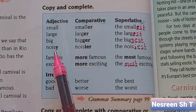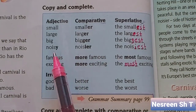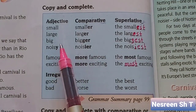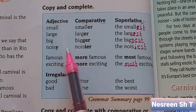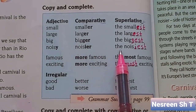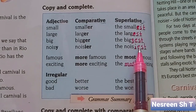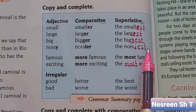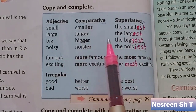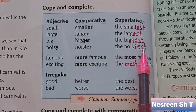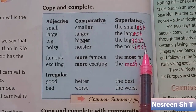Noisy — noisy is a short adjective ending with y. We change the y to i, then add -est. Noisy becomes the noisiest.